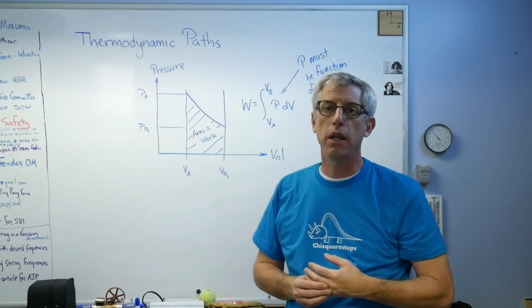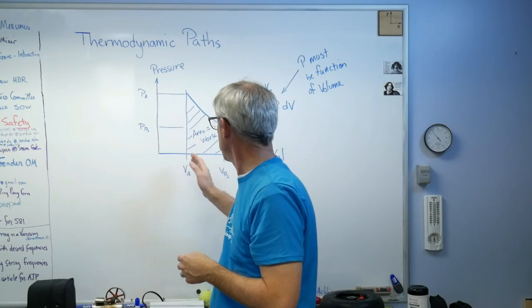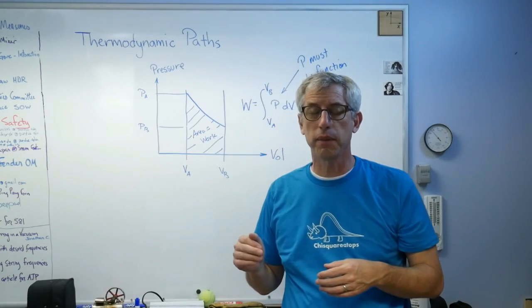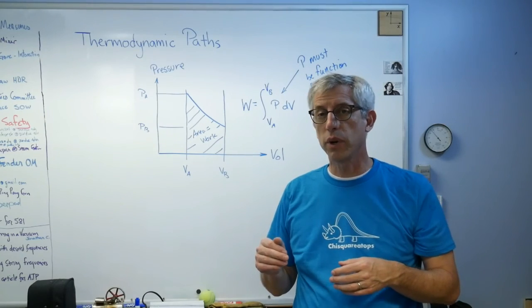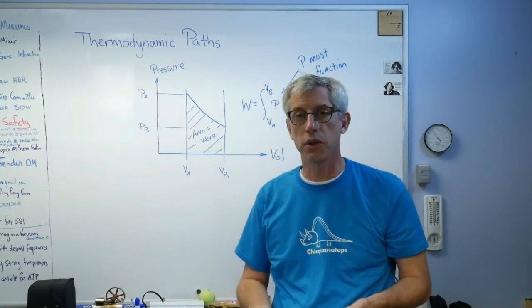Typically what you'll do is you'll go around the boundary of some path on one of these drawings. And anything that stays the same as something happens in your path has the word, the prefix 'iso' in front of it. So you have isothermal, isobaric, isentropic, things like that.